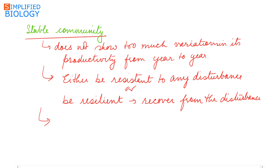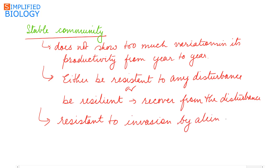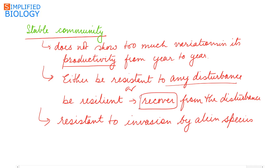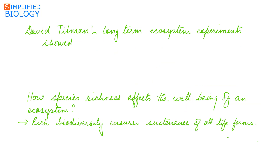A stable community is also resistant to invasion by alien species — species that are not present in the community. When they try to invade the community, it doesn't affect the community. So a stable community shows stable productivity, is resistant to disturbance or easily recovers from it, and is resistant to invasion by alien species. David Tilman's long-term ecosystem experiment showed that plots with more species show less variation in total biomass.